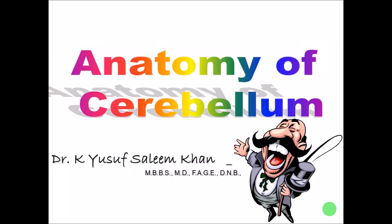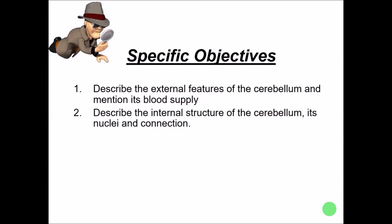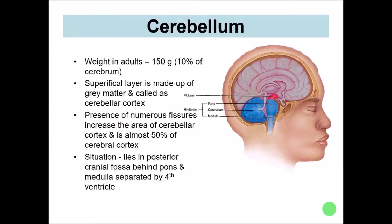Hi friends, this is the revision of the anatomy of the cerebellum. The cerebellum is present in the posterior cranial fossa, behind the pons and the medulla oblongata, separated by a space cavity called the fourth ventricle.